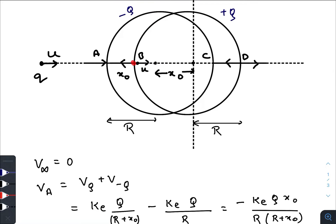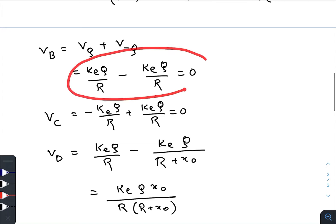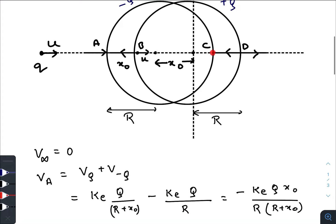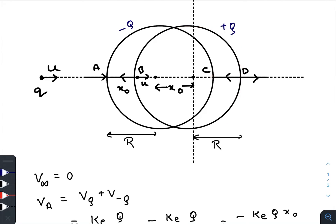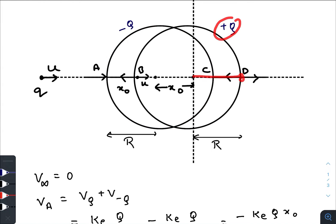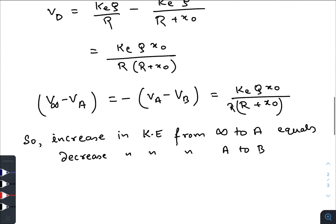The potentials due to the two shells at point B are equal and opposite, so the final potential will be zero, because this point lies inside the minus Q charge, giving a potential of minus k_e Q divided by R, the radius of the negatively charged shell. At point C also the potential is zero. At point D, which lies on the surface of plus Q and outside of minus Q, we take k_e Q over R minus k_e Q over (x naught plus R).